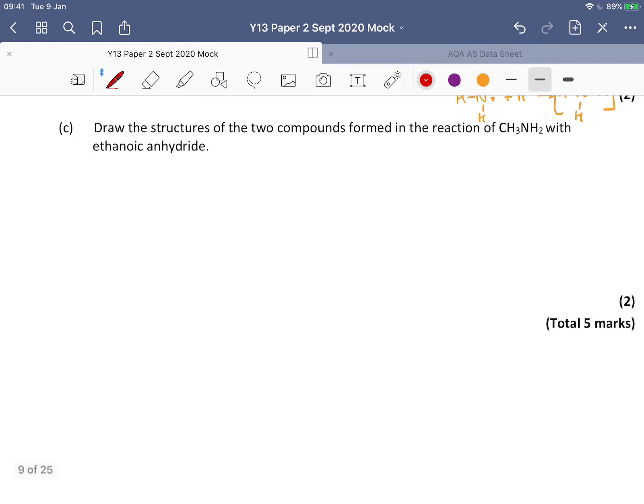Draw the structures of the two compounds formed in the reaction of CH₃NH₂ with ethanoic anhydride. So ethanoic anhydride has this structure, all right. And then another way of showing that is to draw it like this. So I'm doing this to remind you.